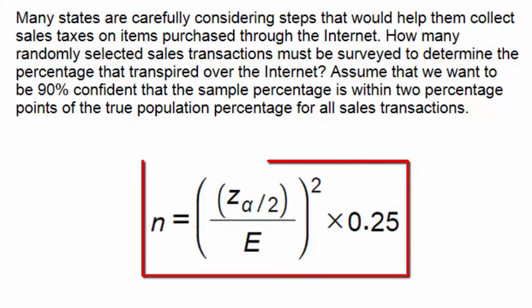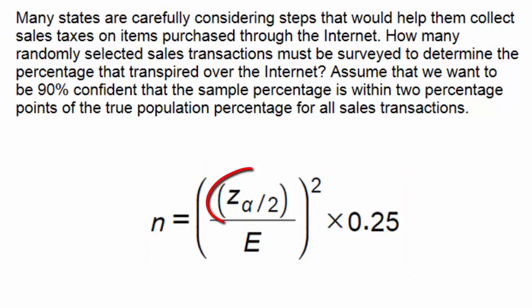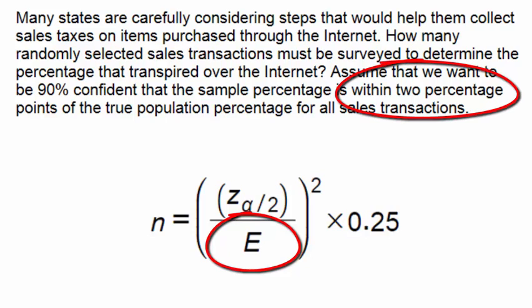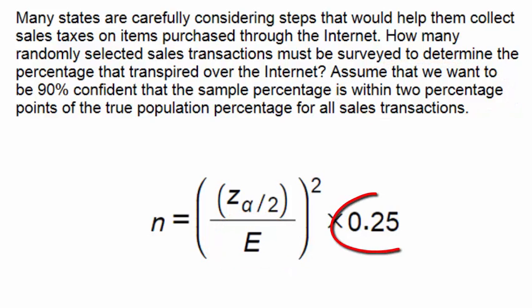The formula that we will use is given below and we see the different variables: z subscript alpha divided by two, which is the critical value associated with the 90% confidence level, and E, the margin of error, which is given by the within two percentage points statement in the original problem. The multiplication by 0.25 is used because we don't have a percentage from a previous study.